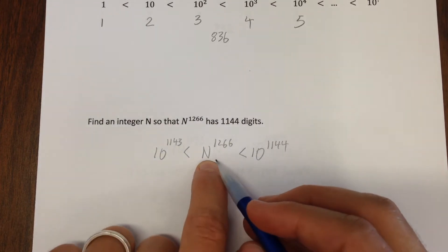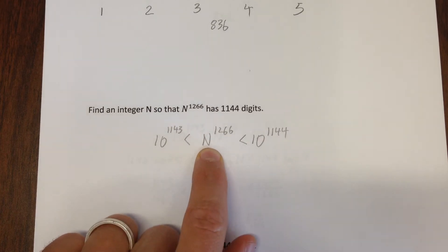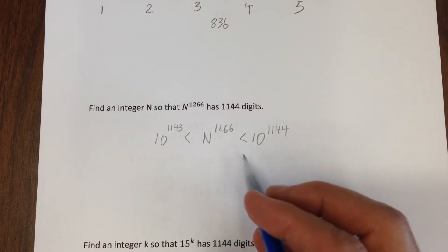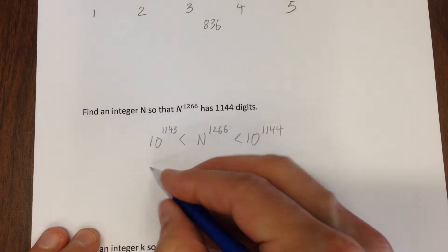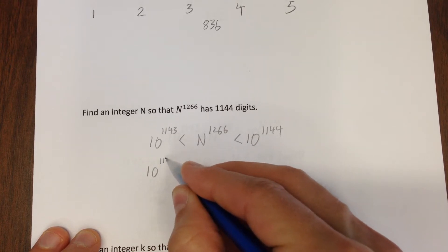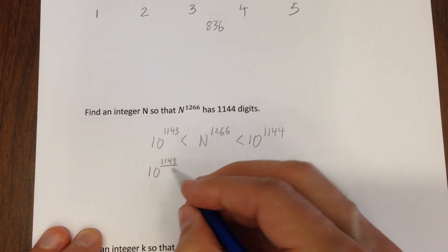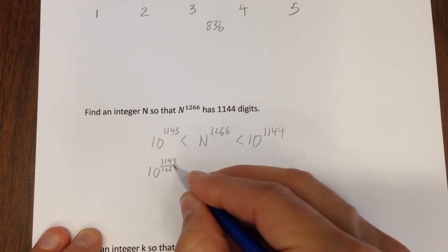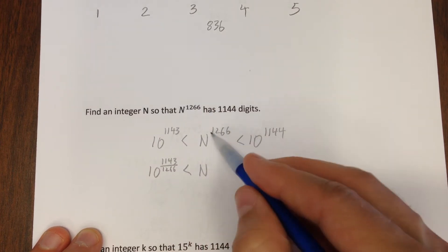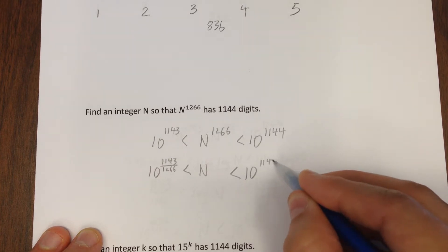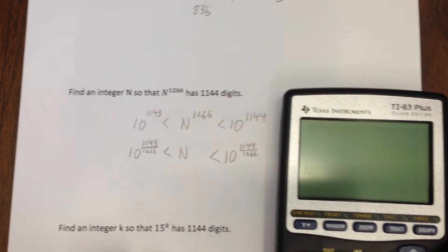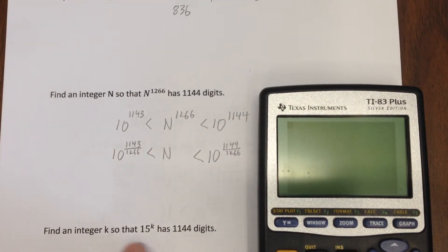So since your variable is in the base, I can actually take, I know this sounds strange, but I can take the 1266th root of all these numbers and the order will be the same. So 1143 to the 1 over 1266th is less than n to the 1266th to the 1 over 1266th, which is less than 10 to the 1144 over 1266. Well, these are numbers I can kind of crank out, give it a nice handy-dandy calculator.